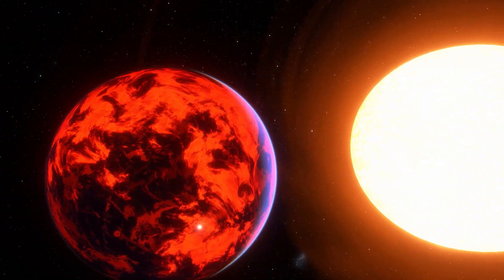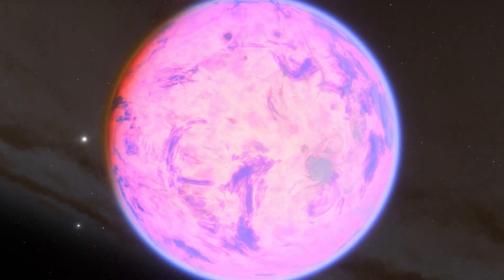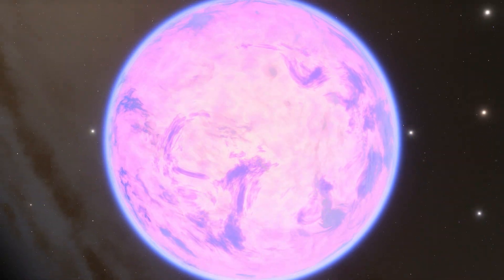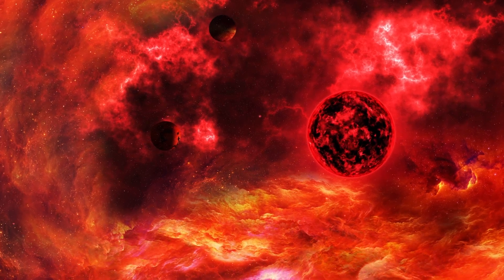This means that there is only ever one side of the planet that is facing its star. This leads to extremely hot temperatures on one side of the planet and freezing low temperatures on the other side. Remember, this type of star makes up 75% of all stars in our galaxy.